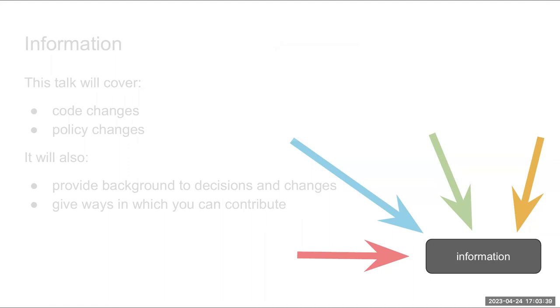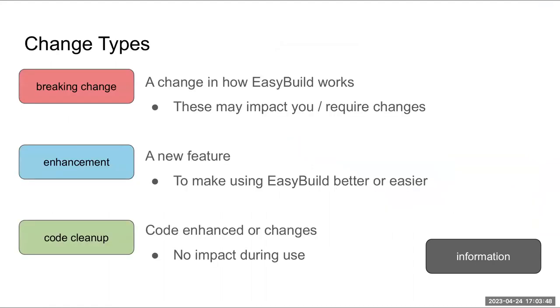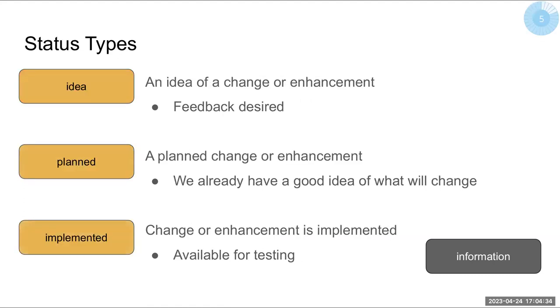You'll also see in the bottom right-hand corner there'll be an information box. In other slides it will be labeled different things: a red one for breaking changes — changes to how EasyBuild works that might or might not impact you depending on which features you're using. There'll also be an enhancement label for new features designed to make EasyBuild better or easier, and green ones for code cleanups, which you shouldn't see any impact from, though they might make your contributions easier and EasyBuild run faster.